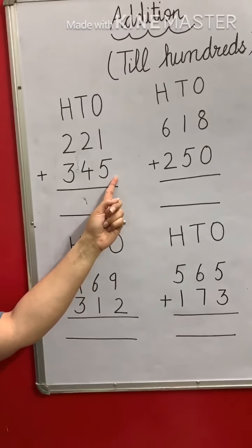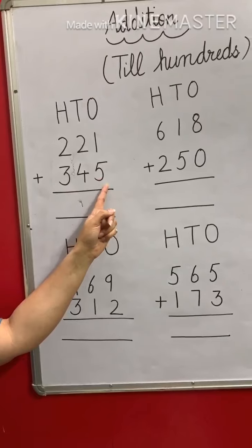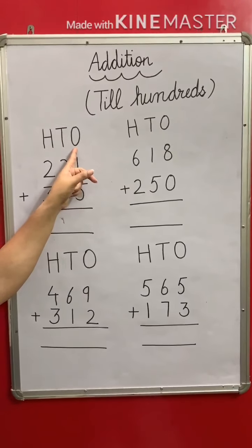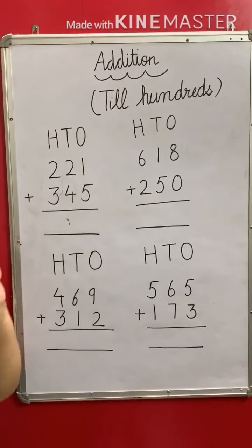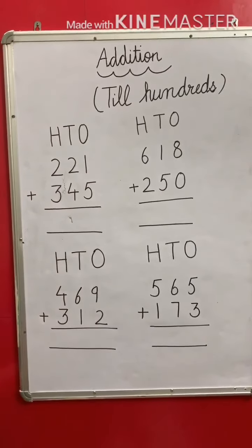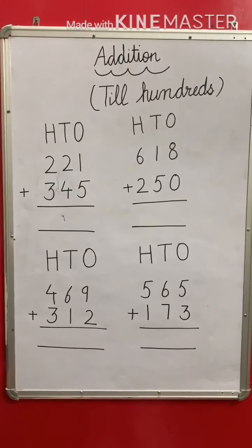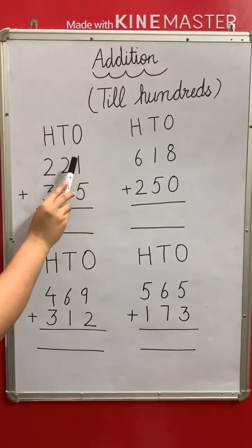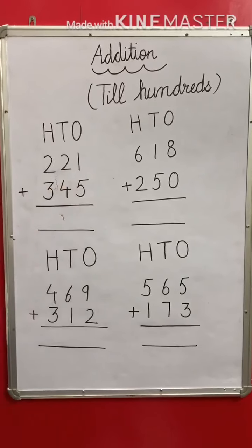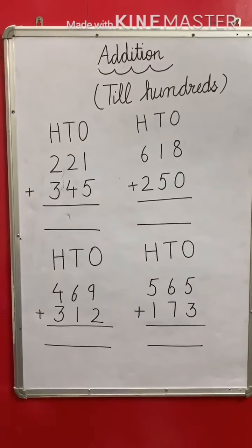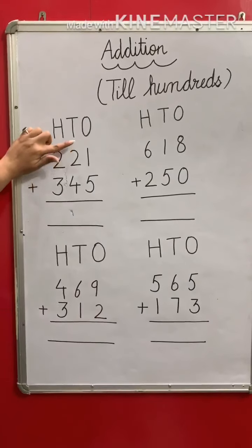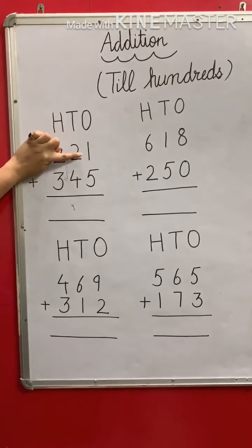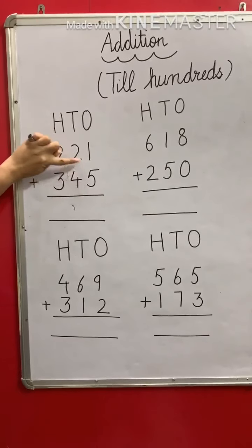For the first one, we always start doing addition sums from the ones place. It's not about addition only — even in subtraction and multiplication we always start solving the sum from the ones place. So let's see here at the ones place which digits are written: 1 and 5.